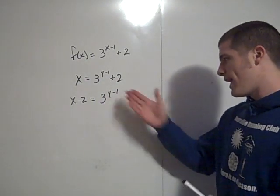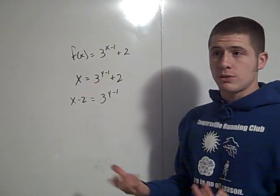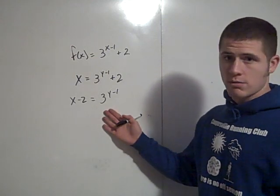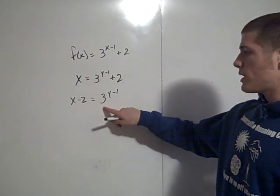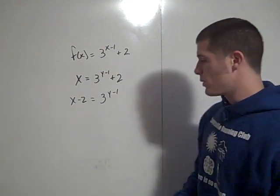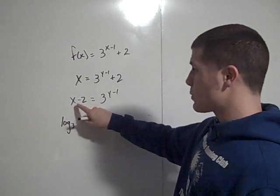Now how am I going to get y out of the exponent there? The trick is to introduce a logarithm, specifically log base 3. If you take the log base 3 of 3 to the y minus 1, you just get y minus 1.